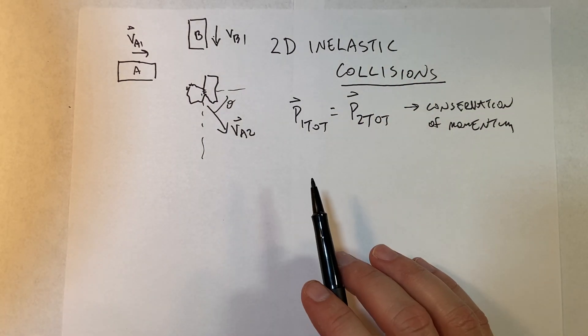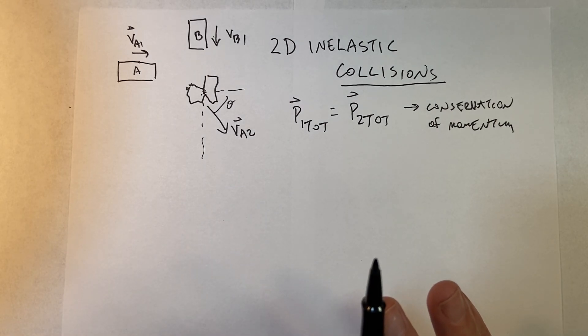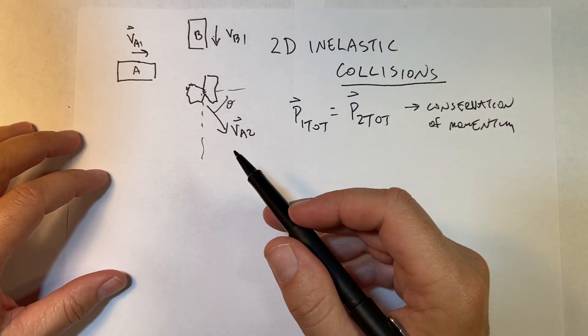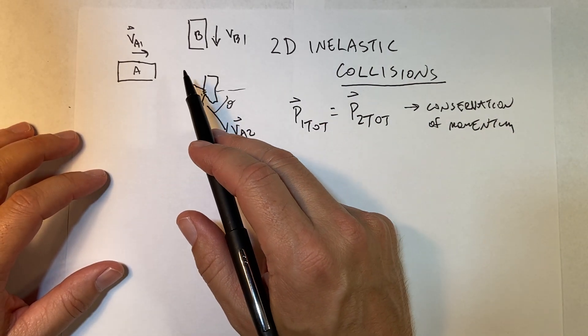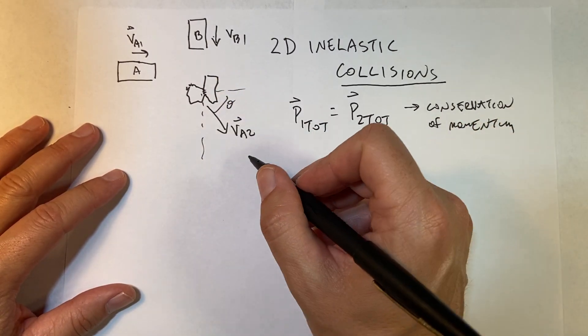So what's different here than in the one-dimensional case is that I need to deal with momentum as a vector. So I could write it as a vector equation. Let me do that. Let's say the initial total momentum is going to be...